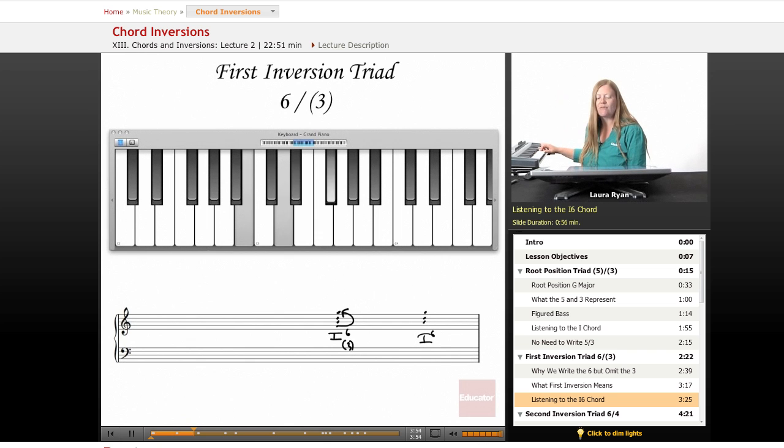So our ears naturally gravitate towards the lowest tone of the chord, right? Okay. One, two, three, four, five, six. Between the bottom note and the root of the chord, which is now on top, there are six tones, which is why we have six there. Between the bottom note and the next note above it, there are three. You don't need to write the three because that's implied. Okay. So let's move on.